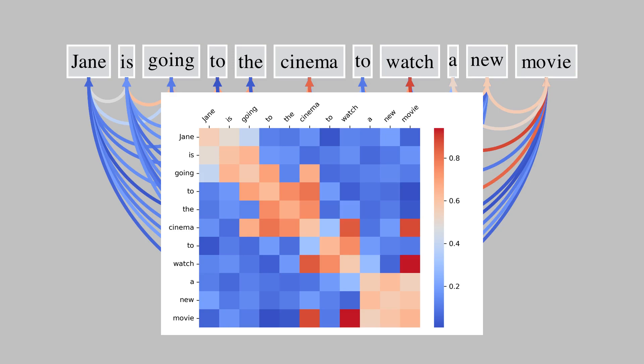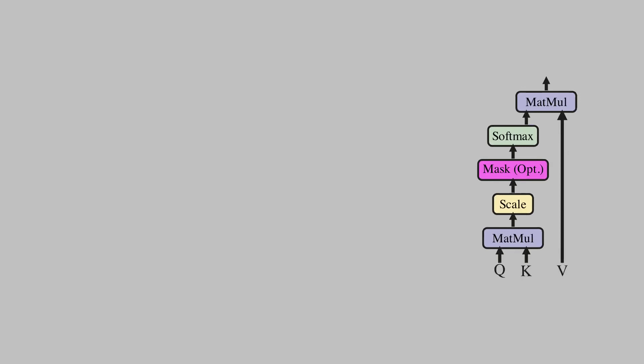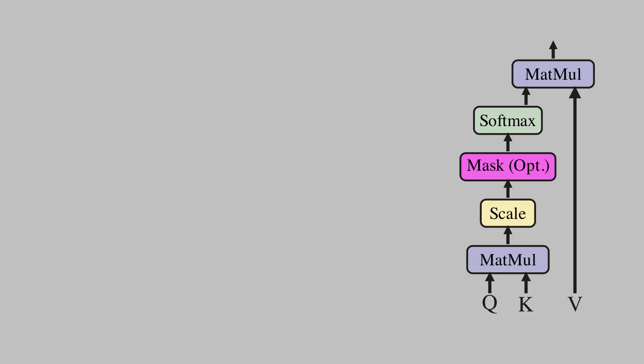In this heat map, higher context similarity is shown in red and lower similarity is shown in blue. Although this is just an example to explain the concept — not obtained from a real computation — the purpose is to explain the concept of an attention matrix as a similarity matrix between the words in a sentence. By now we have a clear understanding of what attention mechanism does: the goal is to build a context similarity matrix.